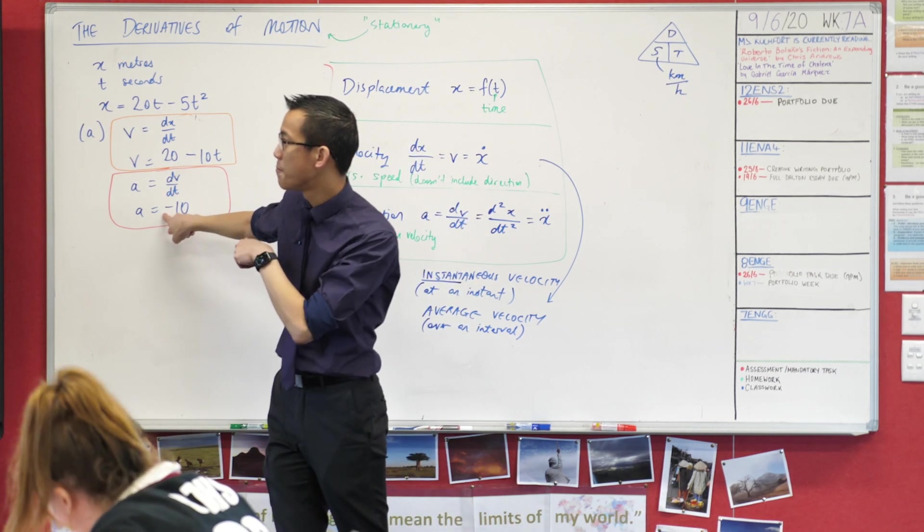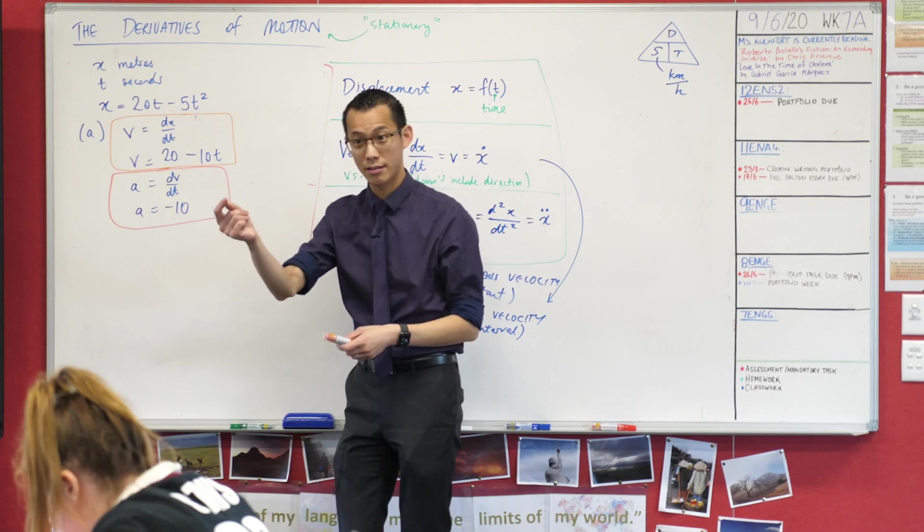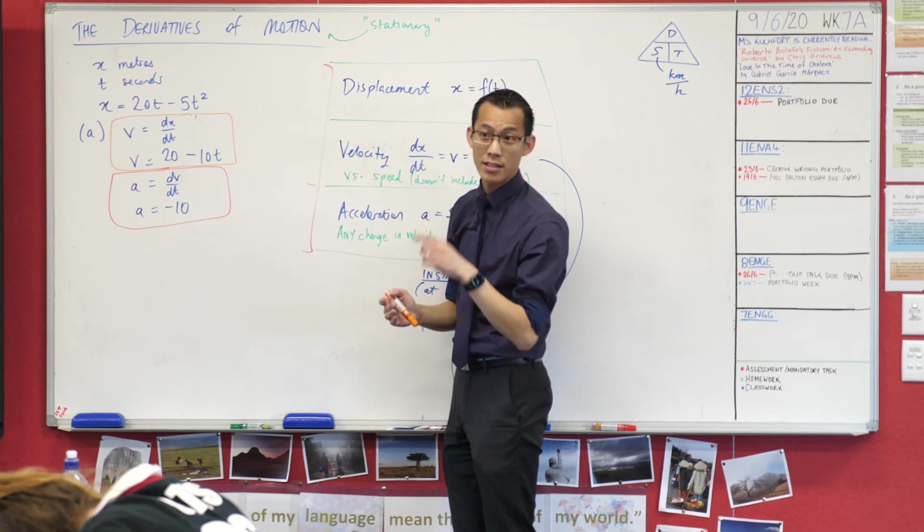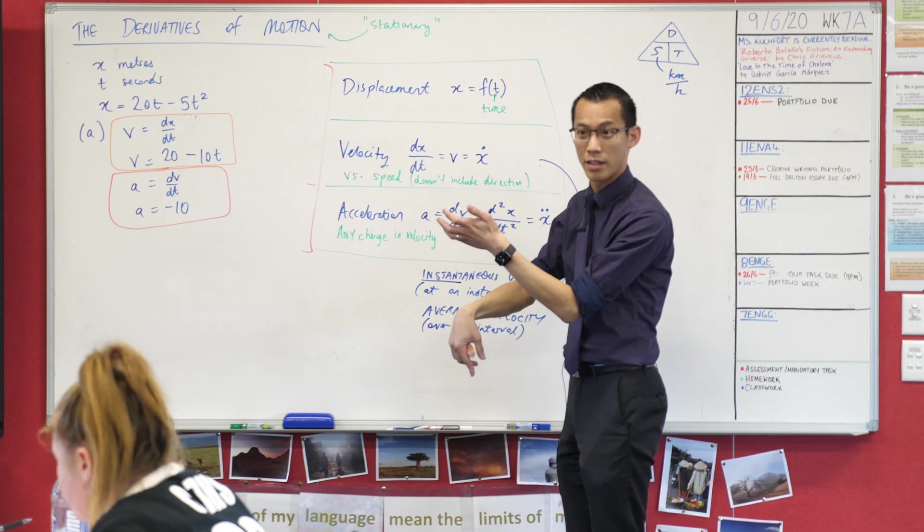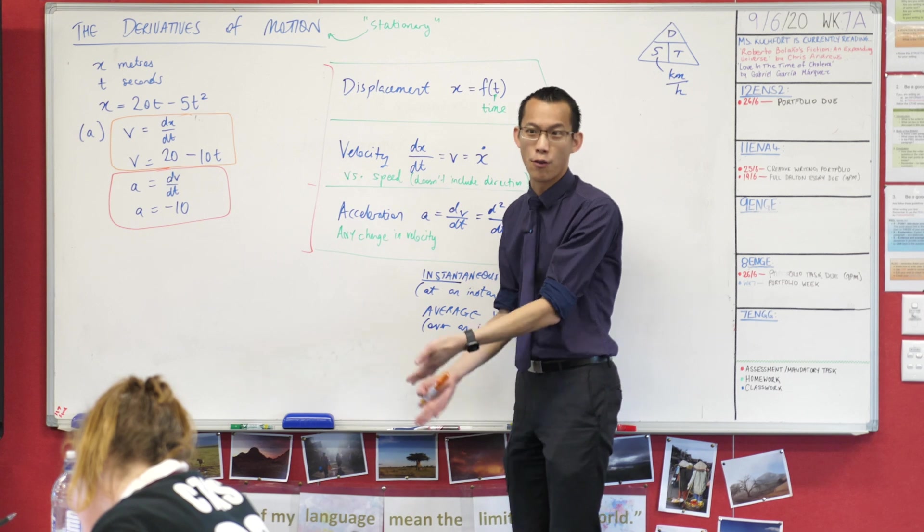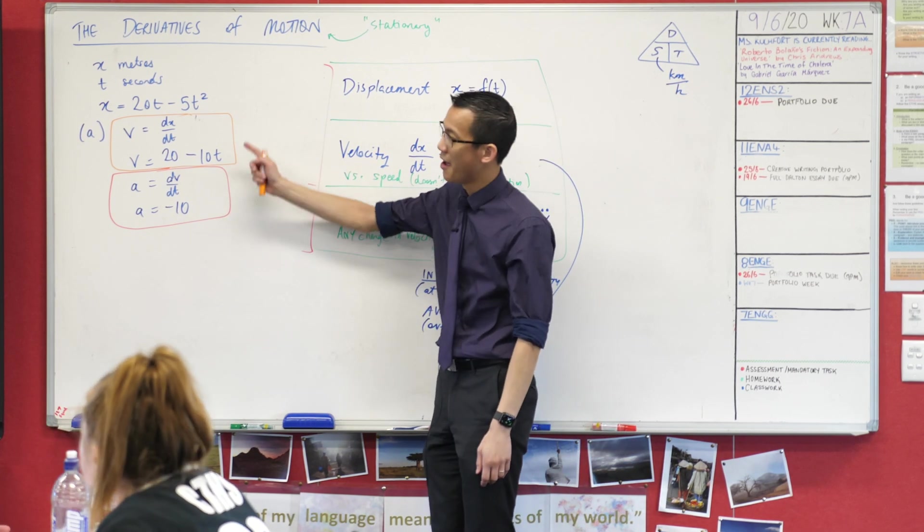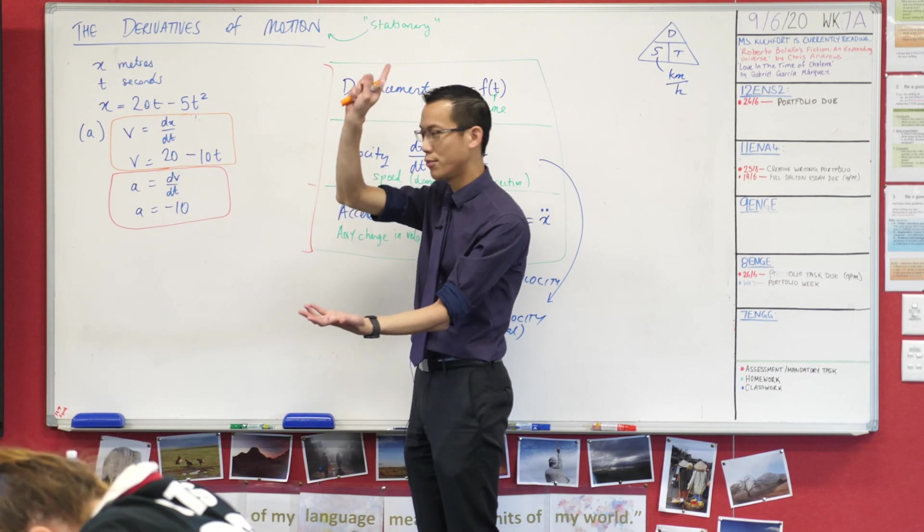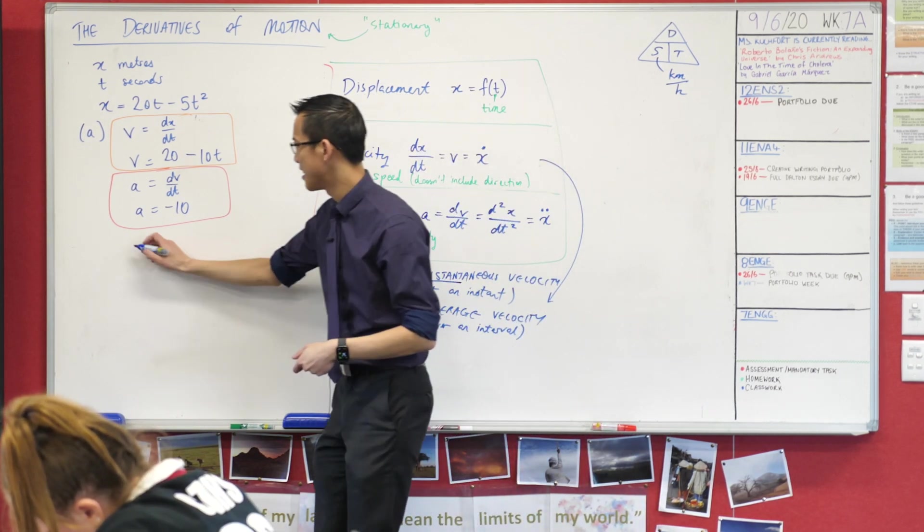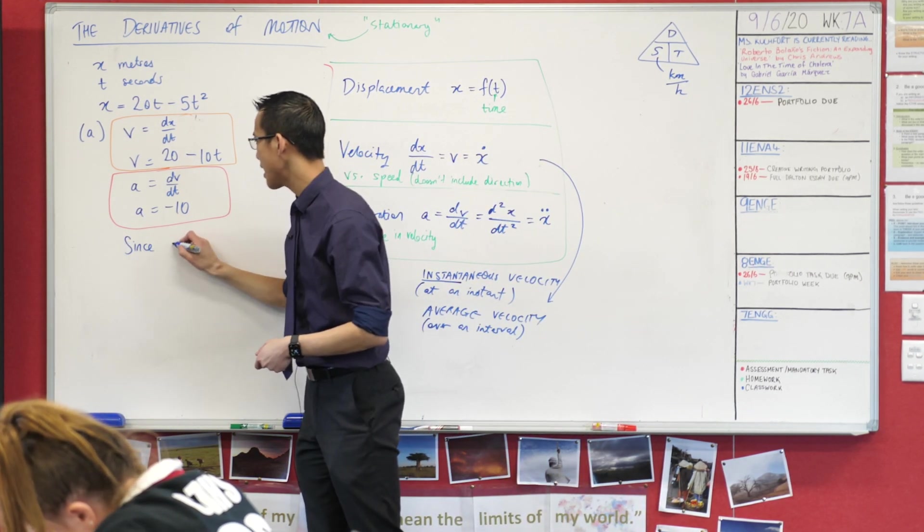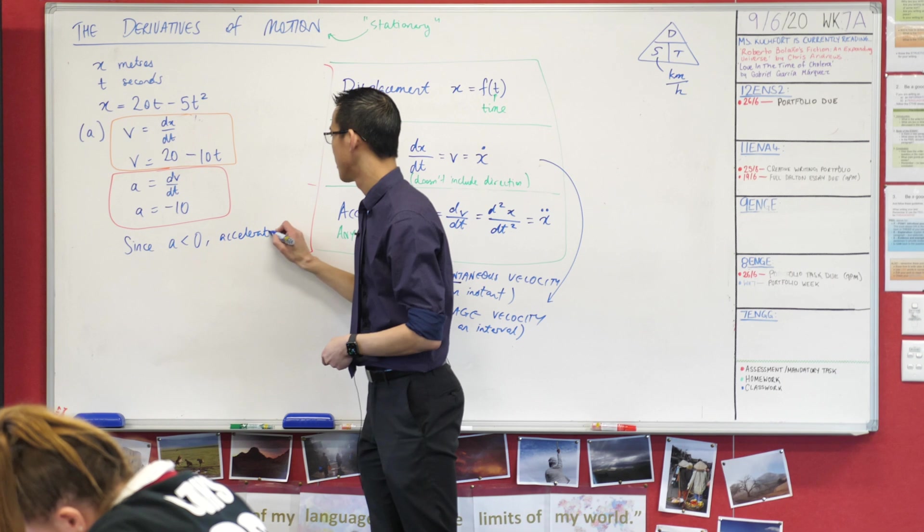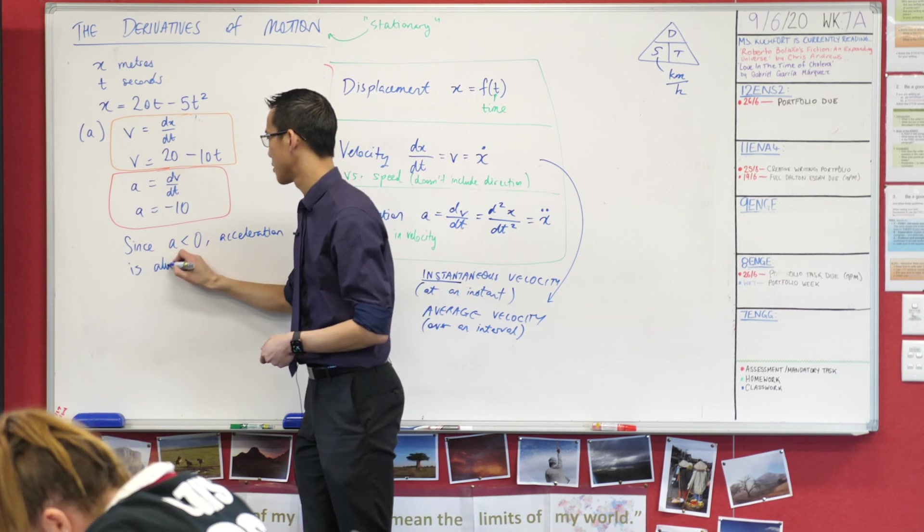Now how do I know that? Look back at the original question. It says a cricket ball is thrown vertically upwards, its height is x, right? And height is an upward measurement. We could just as easily say the measurement downward is positive if you were like a submarine, but in my situation they said height, height is measured upwards, so negative is measured downwards.